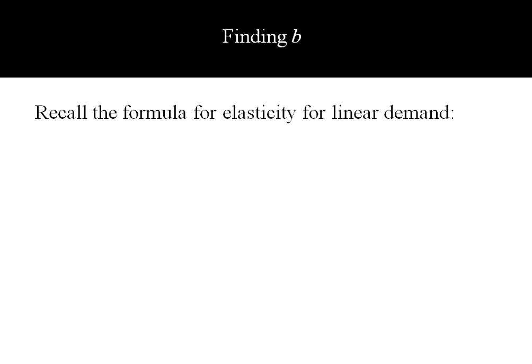To find B, we're going to recall the formula for elasticity for linear demand. We have that nice shortcut where elasticity is the negative of B times P star over Q star. So those are the market price and quantity.